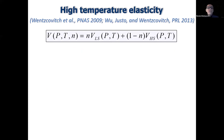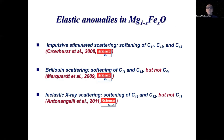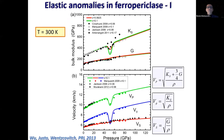There were very controversial measurements of elastic anomalies in this material — three different measurements published in Science, all controversial, nobody agreed with everybody. Using inelastic X-ray scattering, we solved the problem. Today we have good agreement with Brillouin scattering. We showed that there is a strong anomaly in the bulk modulus at 300 Kelvin — we agree very well with Brillouin scattering — and there is not a significant anomaly in the shear modulus.